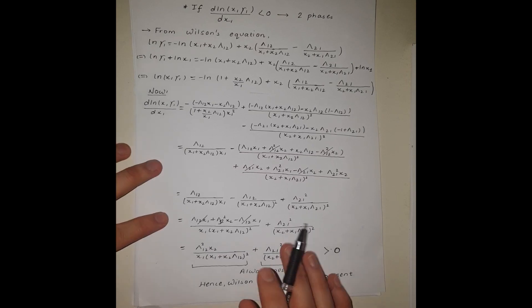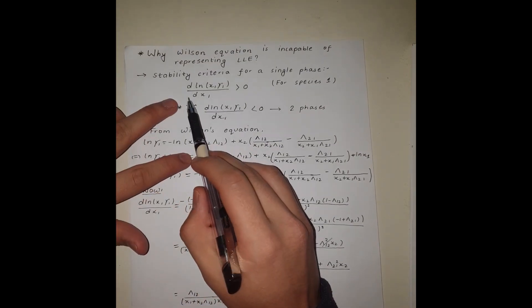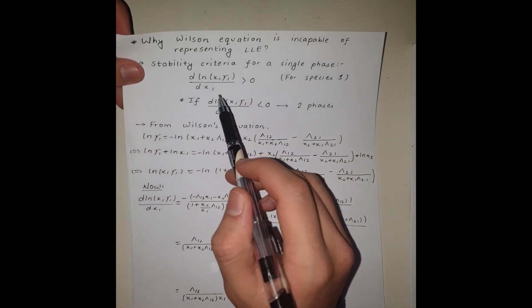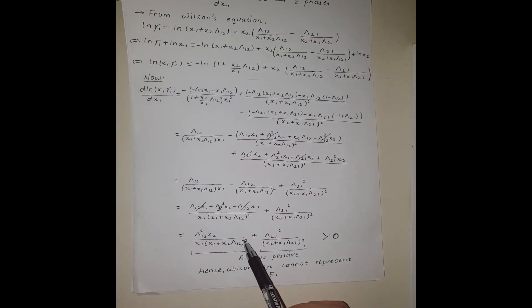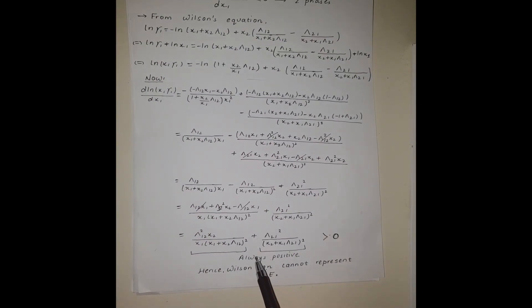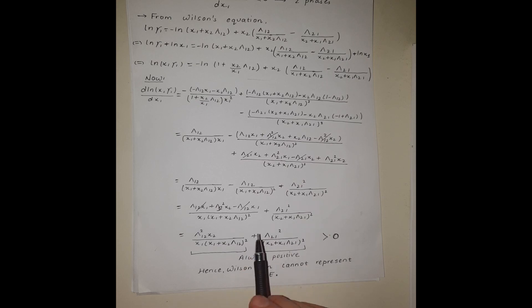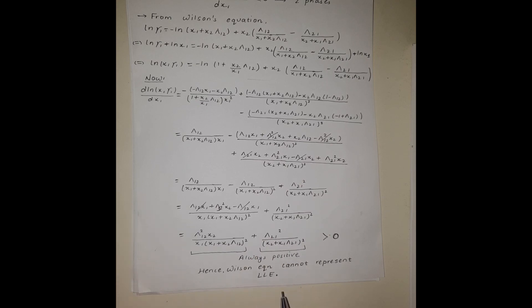Since this derivative is always greater than zero, it always fulfills the stability criterion for a single phase. This means the Wilson equation always predicts complete miscibility — a single phase. Therefore, if you have a system with a range of immiscibility, there is no point in using the Wilson equation, and hence it cannot represent a liquid-liquid equilibrium. Thank you for watching.